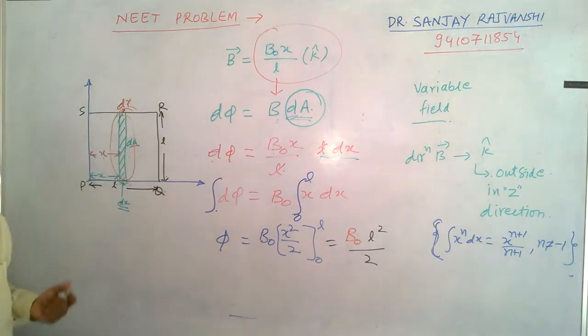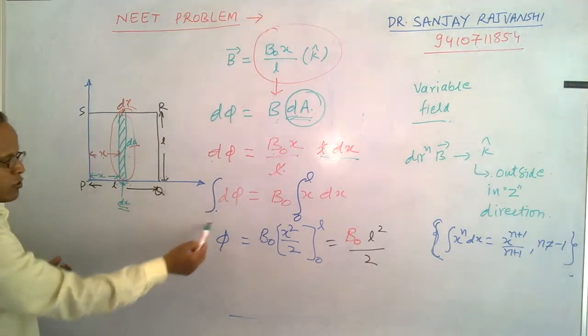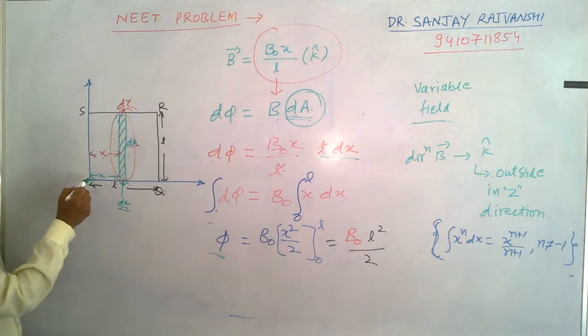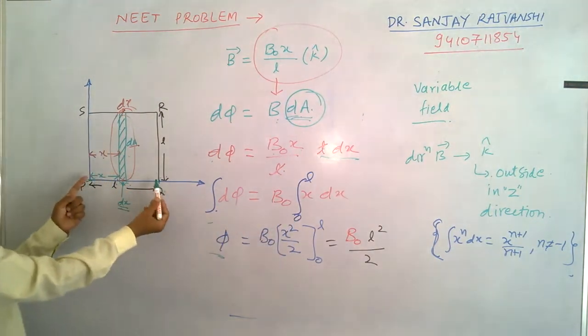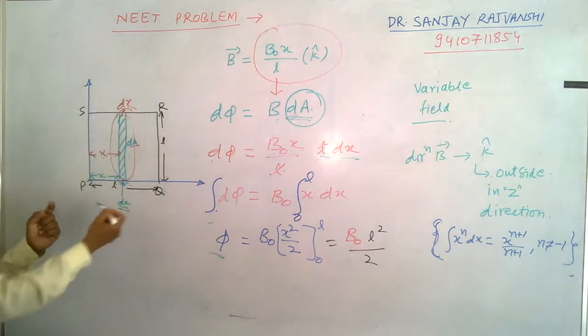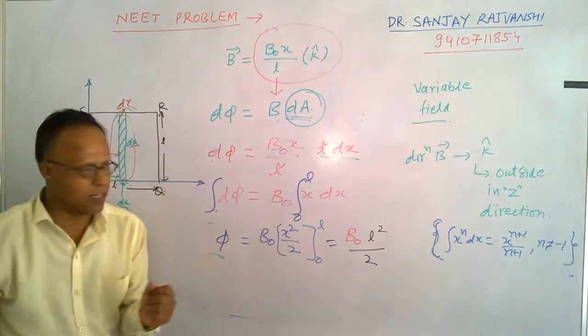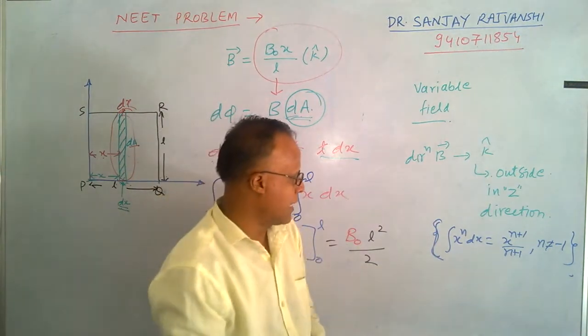Now integrate it and you get the total flux phi. Integrate from P to Q, the initial limit is zero and final limit is length of this square PQRS, so it is L. Integration of x to power n dx is x to power n plus 1 upon n plus 1 when n is not equal to minus 1.